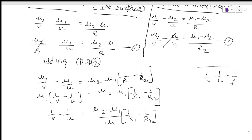So, remember this formula: 1 by v minus 1 by u equals 1 by f, which is the lens formula. And therefore, 1 by f equals mu2 minus mu1 by mu1 into 1 by R1 minus 1 by R2.